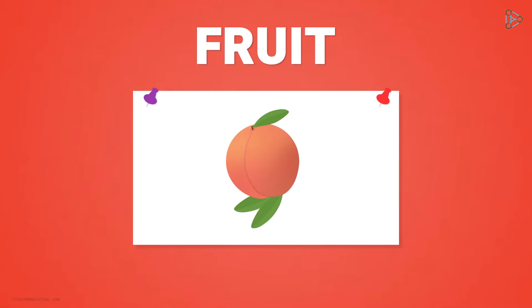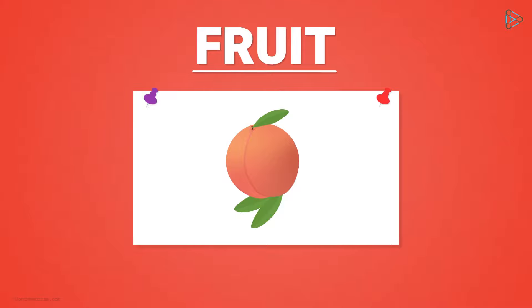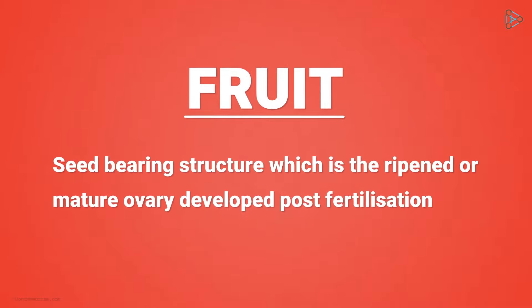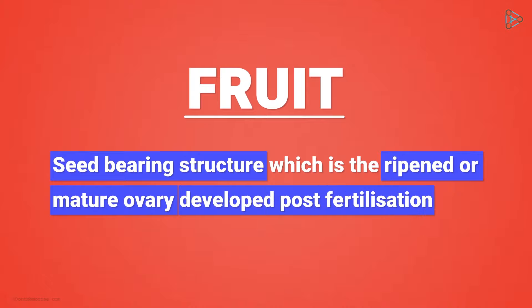To know this, we must first know what exactly a fruit is. For a layperson, it's simply a pulpy sweet edible part of the plant. But a botanist will define it precisely in a different way. A fruit is defined as the seed-bearing structure, which is actually the ripened or the mature ovary developed post-fertilization.